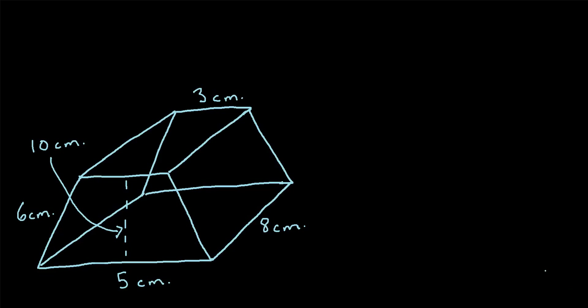In this video, we will talk about how to find the surface area of a trapezoidal prism. Let's check out an example. We have a trapezoidal prism and we want to find the surface area — that's just the area of all of the outside sides of the figure.